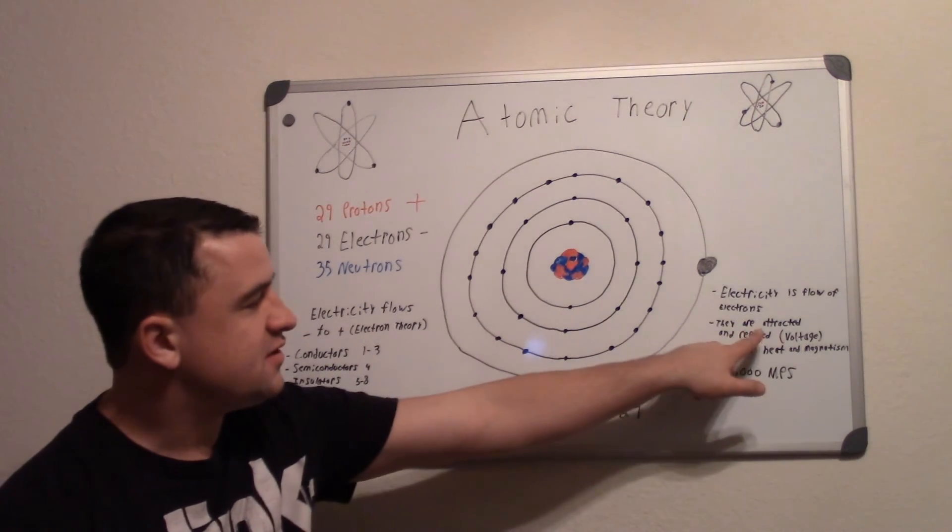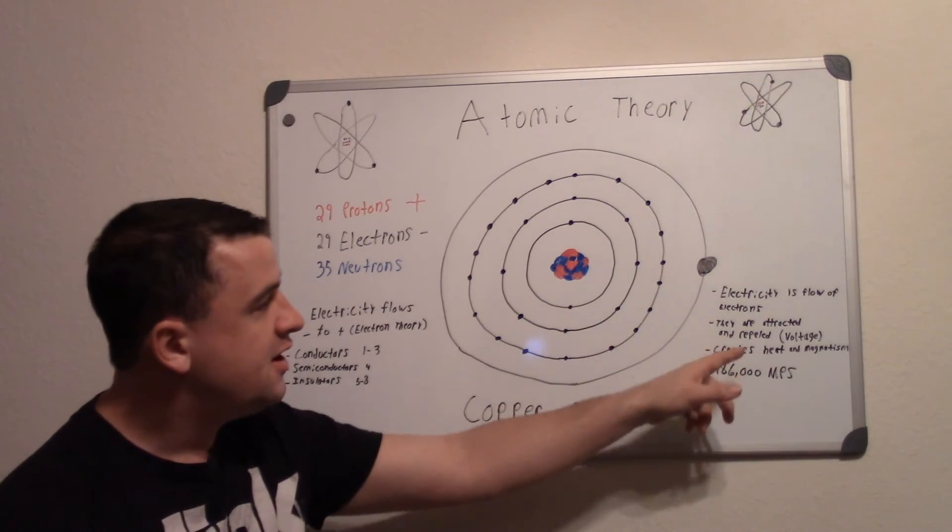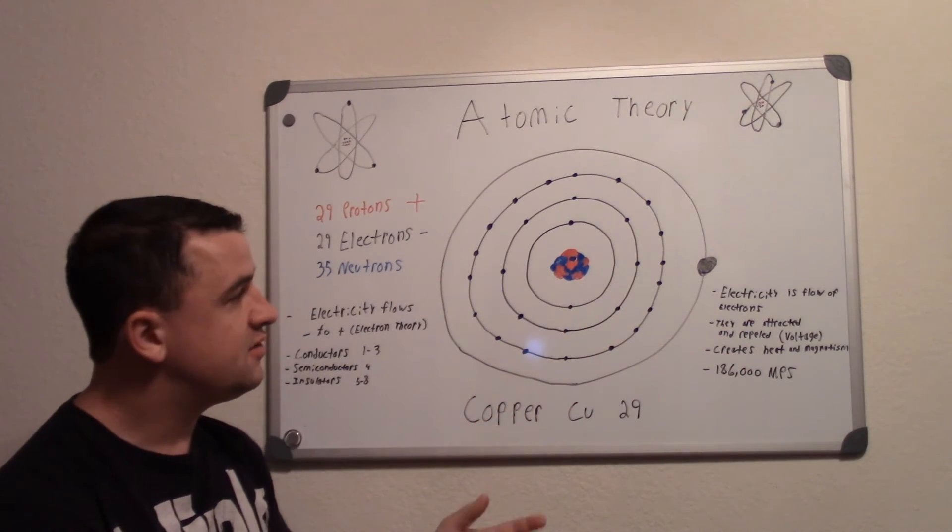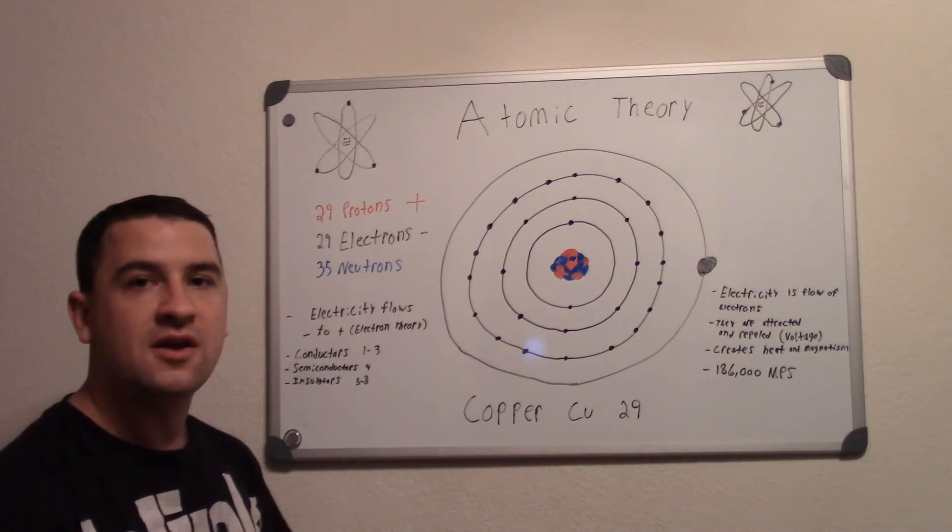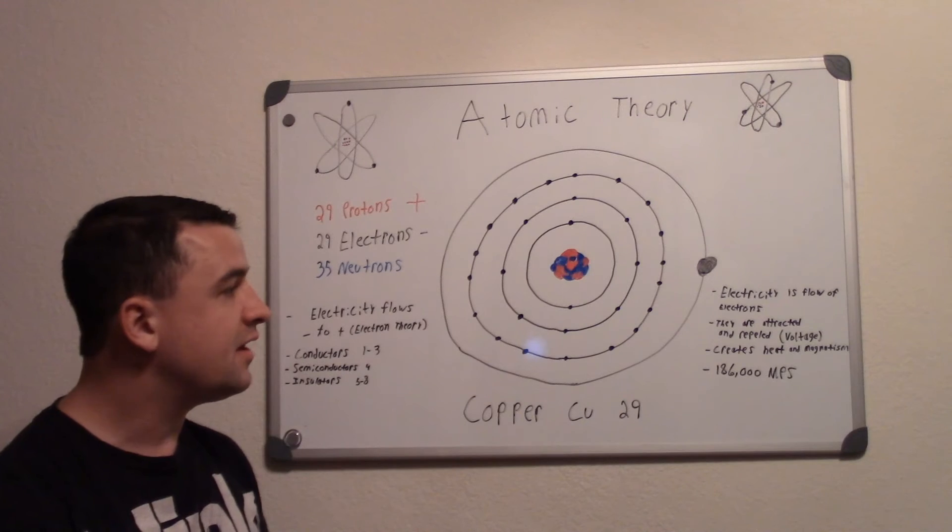And that's basically what voltage is: when the electrons are magnetically attracted to the positive side because they are negative, and when they are repelled away from the negative side, that is voltage.